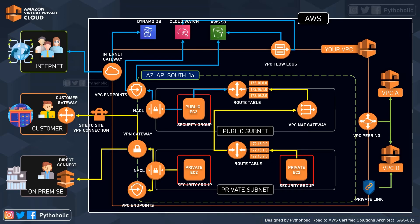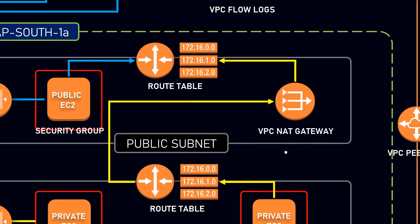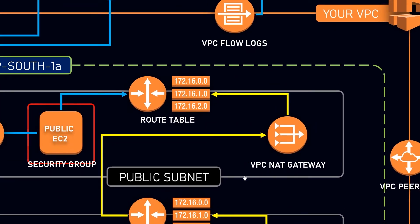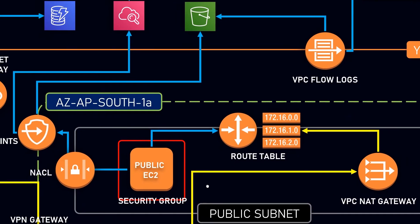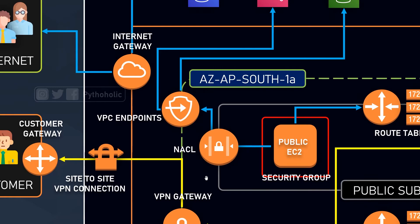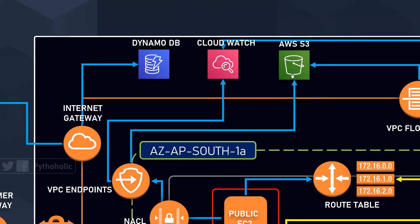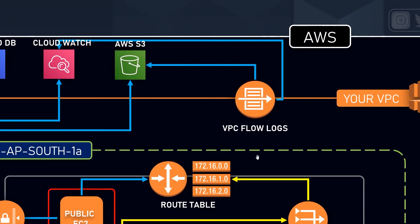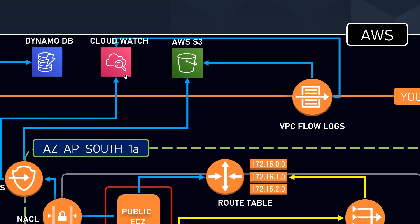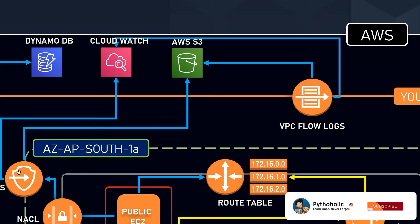When we complete this series of videos on VPCs, you will be able to explain this diagram and architecture to others like a pro. Let's highlight some of the important points: we have the route tables, the VPC NAT gateway, and the network access control list. From VPC flow logs, we can capture logs to AWS CloudWatch and AWS S3.